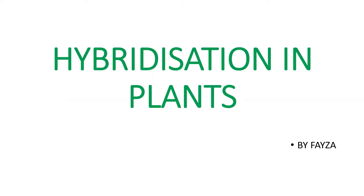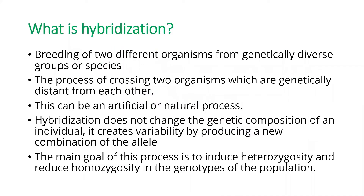First of all, what is hybridization? Hybridization is the breeding of two different organisms from a genetically diverse group or species — the process of crossing two organisms which are genetically distant from each other. This process can be artificial or natural. It does not change the genetic composition of an individual, but it creates variability by producing a new combination of alleles.